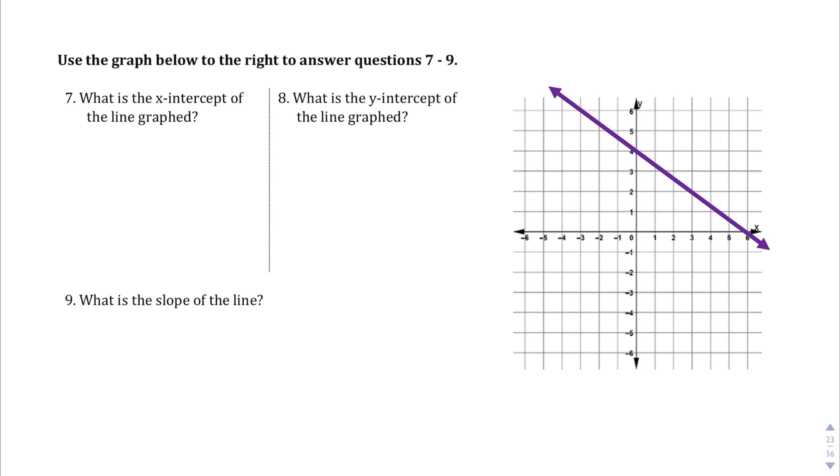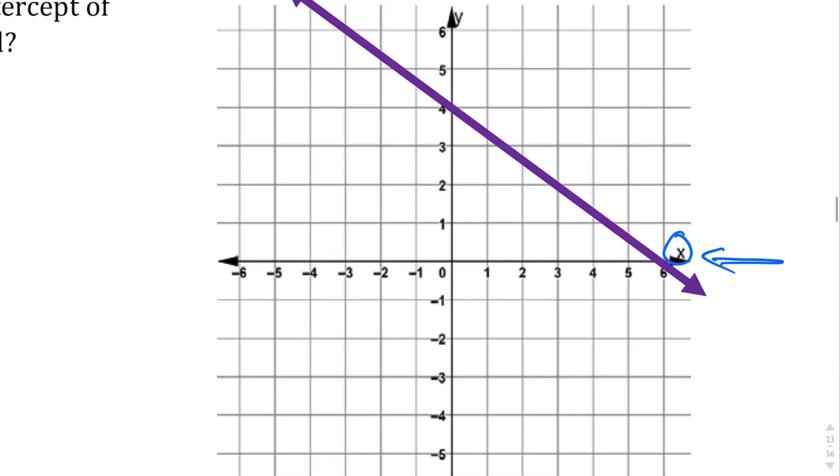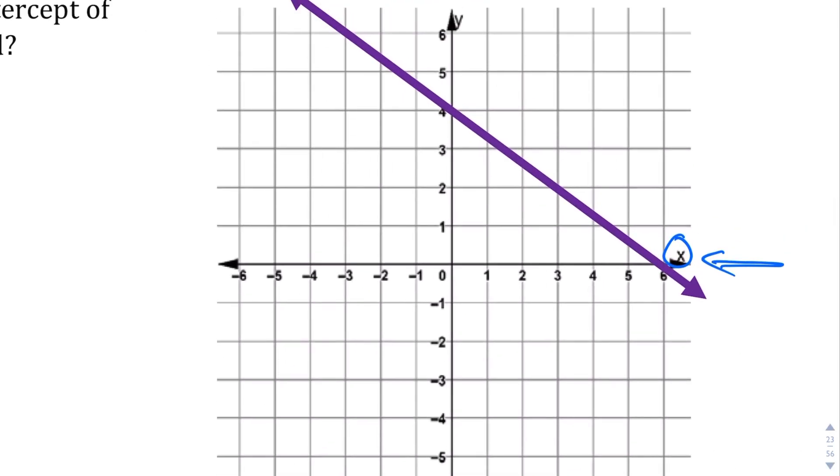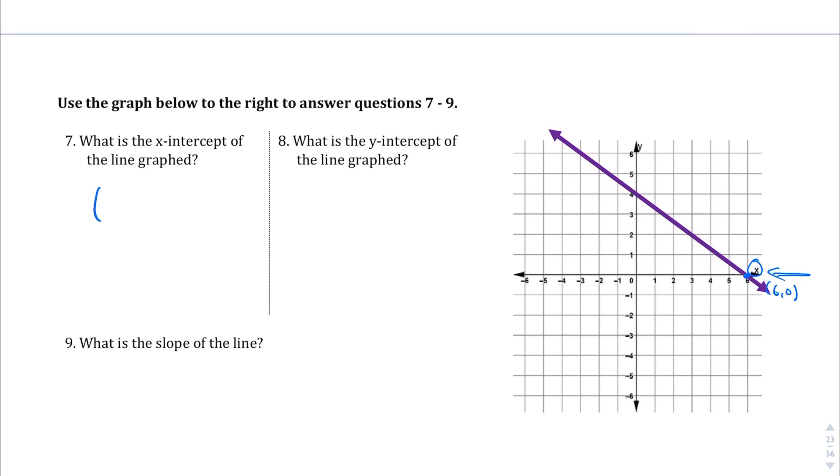What is the x-intercept of the line graphed? If we look at this line, the x-intercept, if you haven't noticed already, is where a line crosses the x-axis. This line right here is the x-axis labeled by the x. Let me zoom in here real quick. We want to know where it crosses that. Well, it crosses it right here at 6, 0. So the answer to this question is 6, 0.